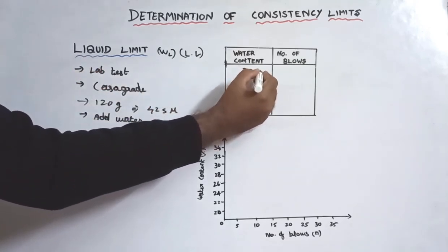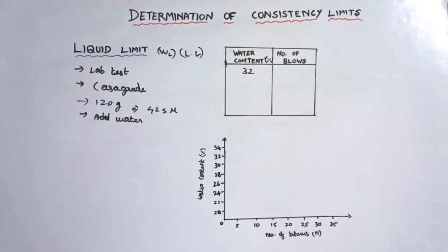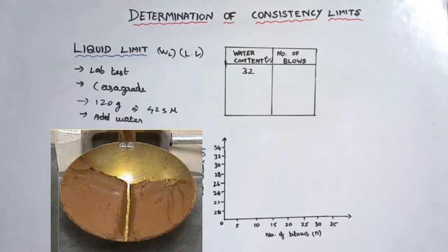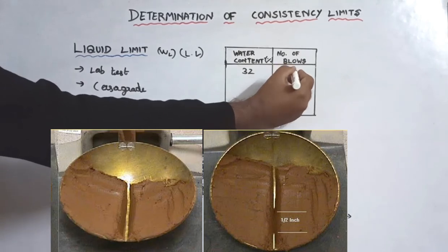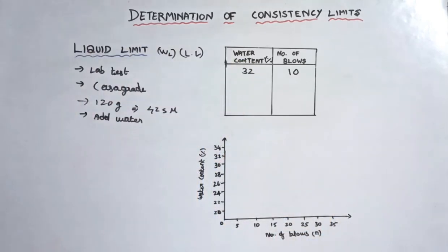For the first trial, we add a pre-determined amount of water to the soil sample, then fill the brass cup. We make a groove in the center of the cup. If we rotate the handle, we count how many blows it takes to touch the bottom. Say the water content is 32% — we count the blows needed to close the groove.